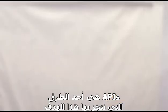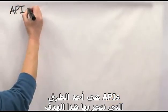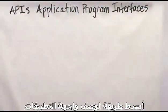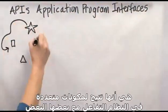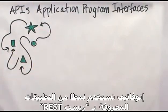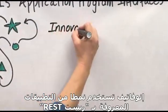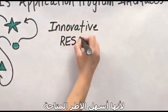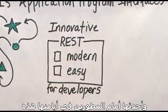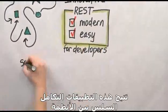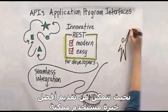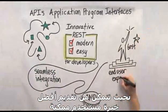One way in which we are accomplishing this goal is through APIs, or Application Program Interfaces. The simplest way to describe APIs is that they allow different software components to interact with each other. Innovative is utilizing a style of APIs known as REST because they are the most modern and easy-to-use framework for developers available today. These APIs allow seamless integration between systems so that you can provide the best end-user experience possible.